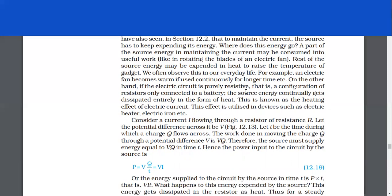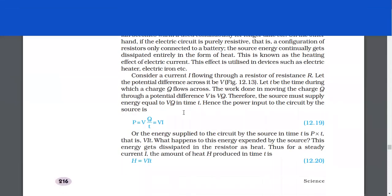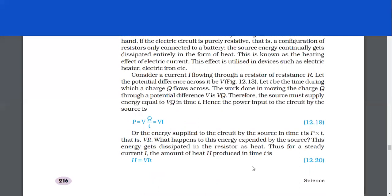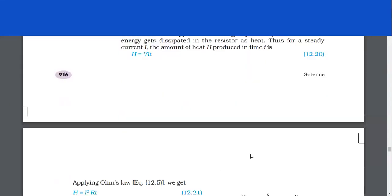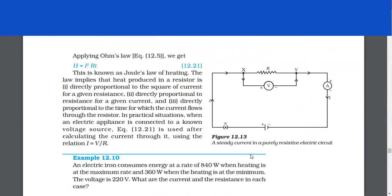This effect is utilized in devices such as electric heater, electric iron, etc. Consider a current I flowing through a resistor of resistance R. Let the potential difference across it be V. Let T be the time during which a charge Q flows across. The work done in moving the charge Q through a potential difference V is VQ. Therefore, the source must supply energy equal to VQ in time T. Hence, the power input to the circuit by the source is P = VQ/T = V × I. The energy supplied to the circuit by the source in time T is P × T = VIT. This energy gets dissipated in the resistor as heat. Thus, for a steady current I, the amount of heat H produced in time T is H = VIT. Applying Ohm's law, we get H = I²RT. This is known as Joule's law of heating.